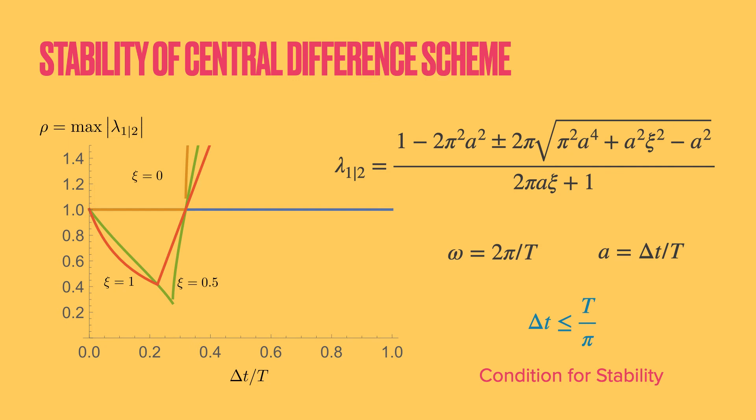On the left is shown the spectral radius for the method. As you can see, if delta t is greater than t by pi, then the method is unstable. If you have multiple degrees of freedom in your system, such as a structure with millions of nodes, then the node with the smallest time period in the system must satisfy this condition. In the Python exercises, you can test this criticality condition yourself.